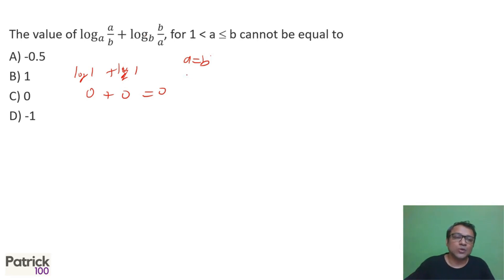So when I put A equal to B, I know the answer will be zero. So zero is possible. And what we find out cannot be equal. Let's take the extreme case where I put B as a very large value and A as a small value.